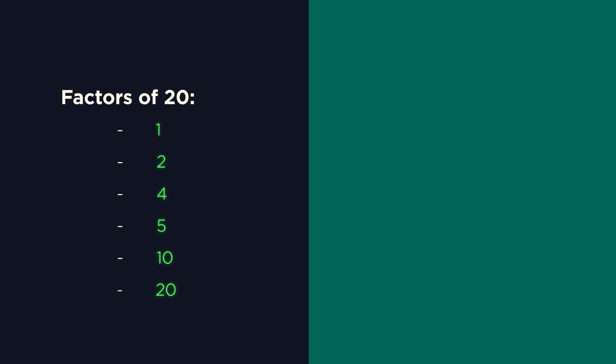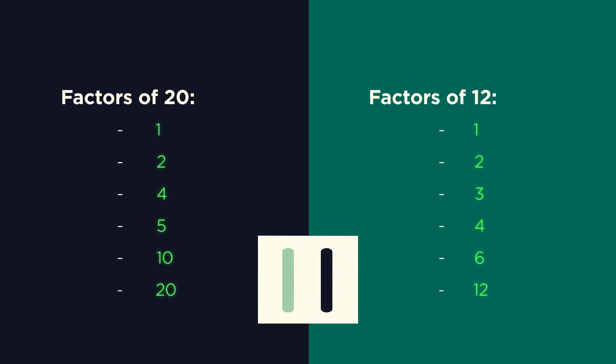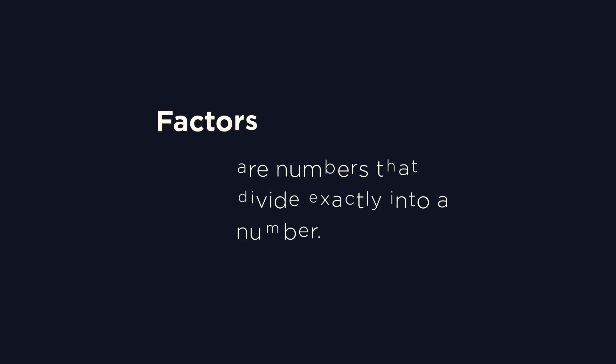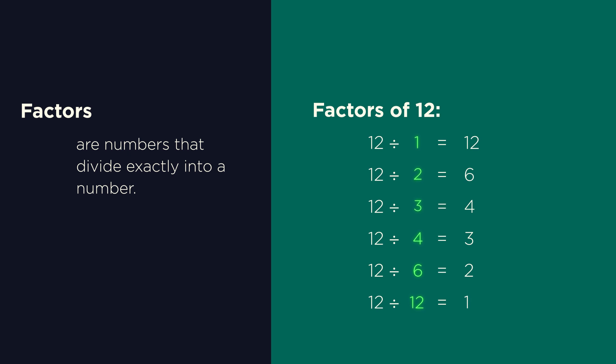Have a look at these factors of 20, and these factors of 12. What do you think factors are? Factors divide exactly into a number. So 1, 2, 3, 4, 6 and 12 are all factors of 12 because they divide exactly into 12.